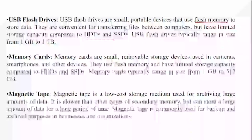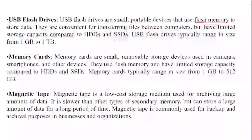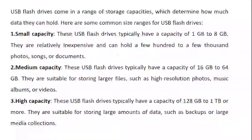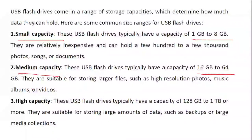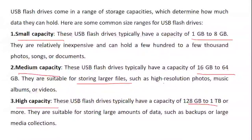Regarding USB flash drive capacity categories: small capacity is 1 GB to 8 GB — inexpensive, can hold hundreds to a few thousand photos, songs, and documents. Medium capacity is 16 GB to 64 GB — suitable for large files, high-resolution photos, and music albums. High capacity is 128 GB to 1 TB — used for backups or large media collections. You should know these capacity ranges well when studying USB flash drives.